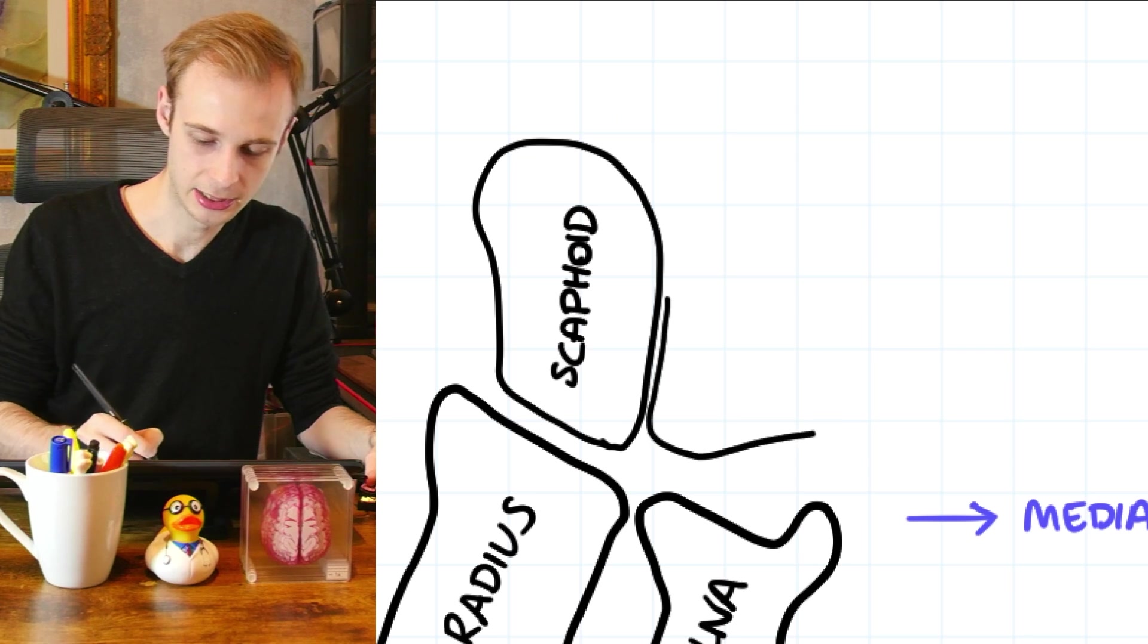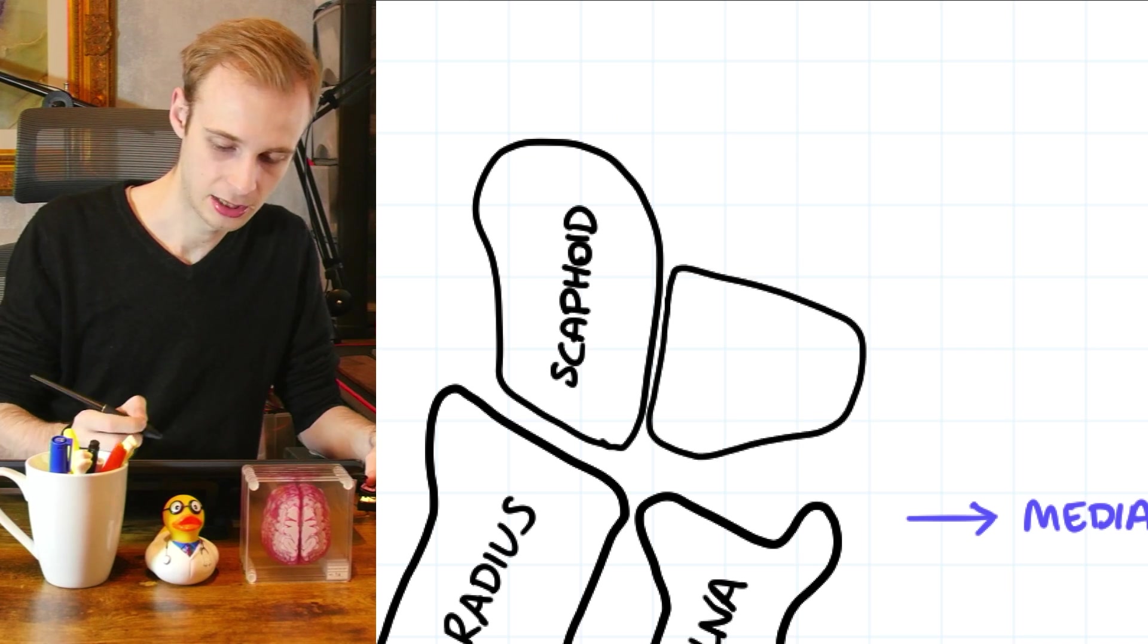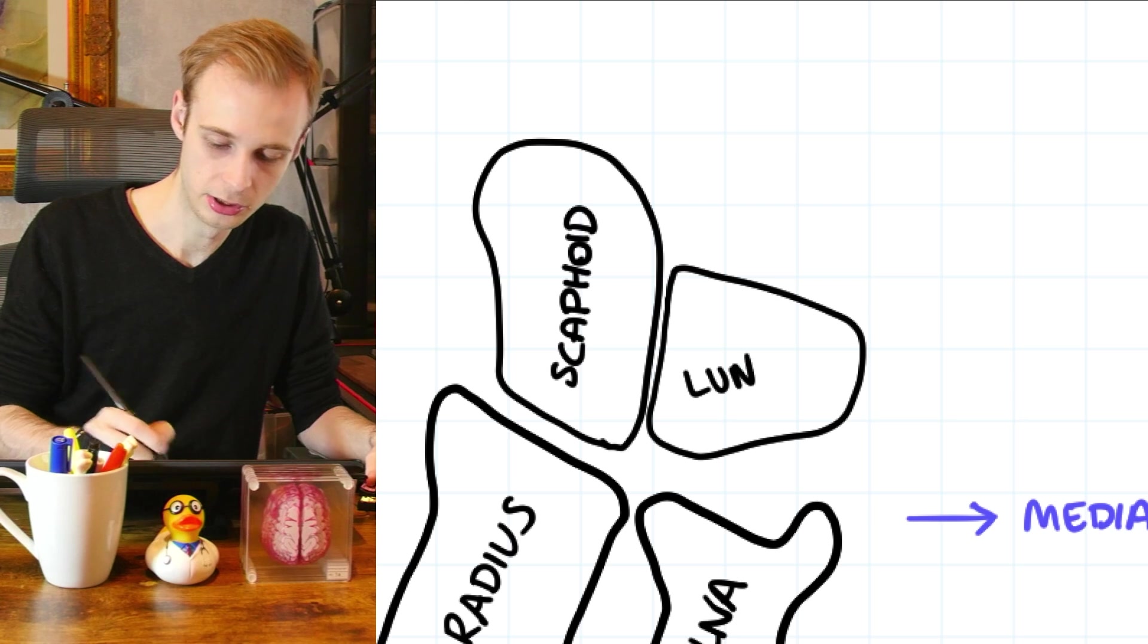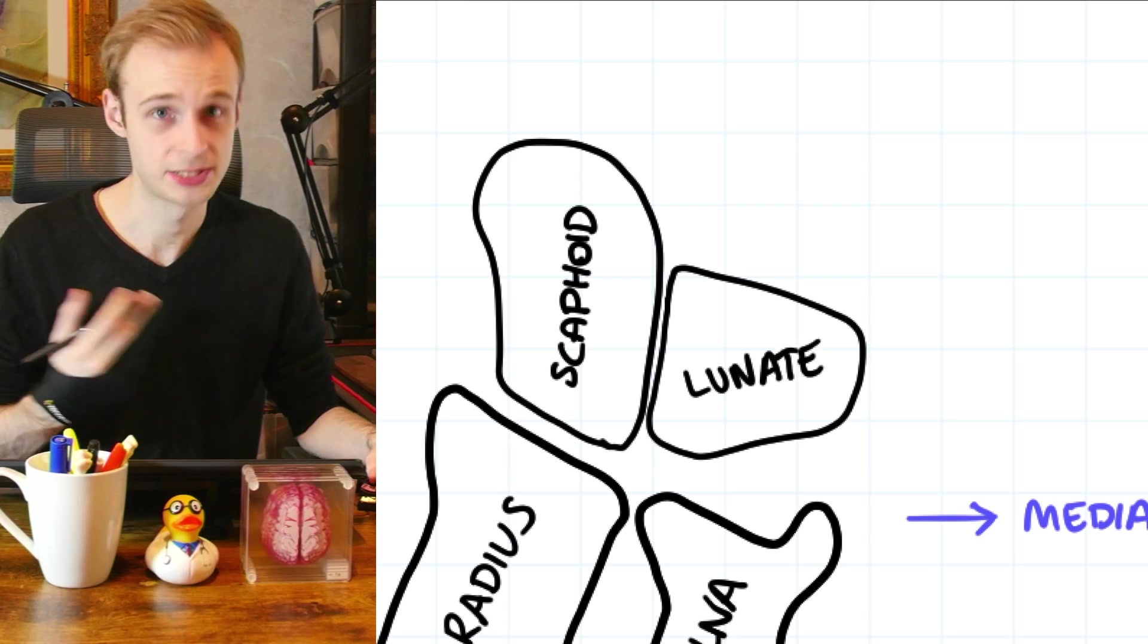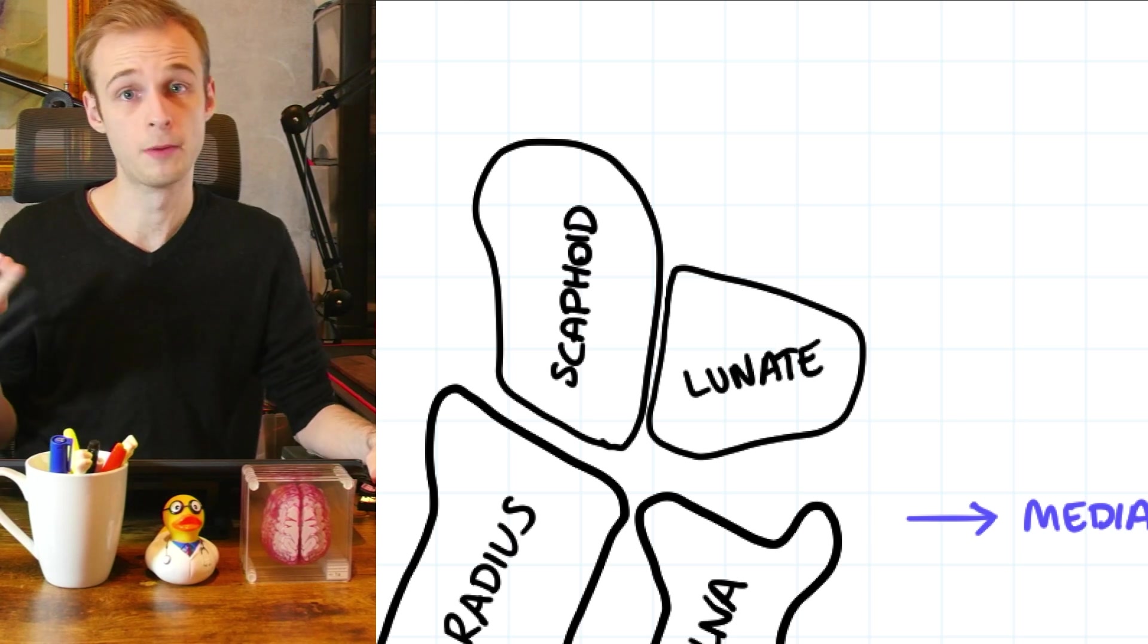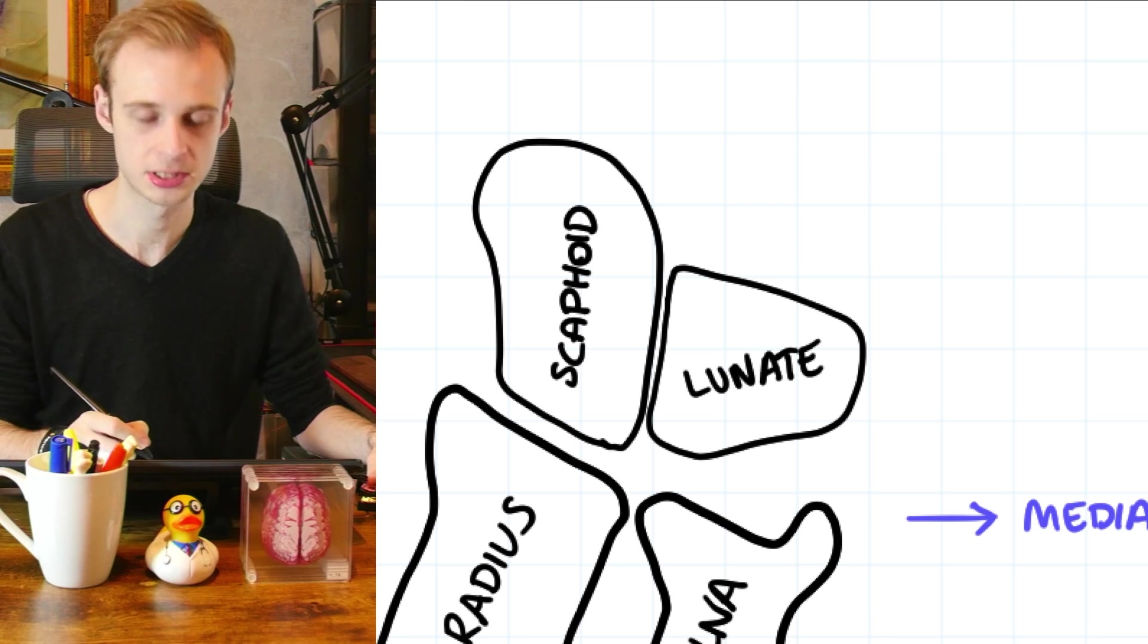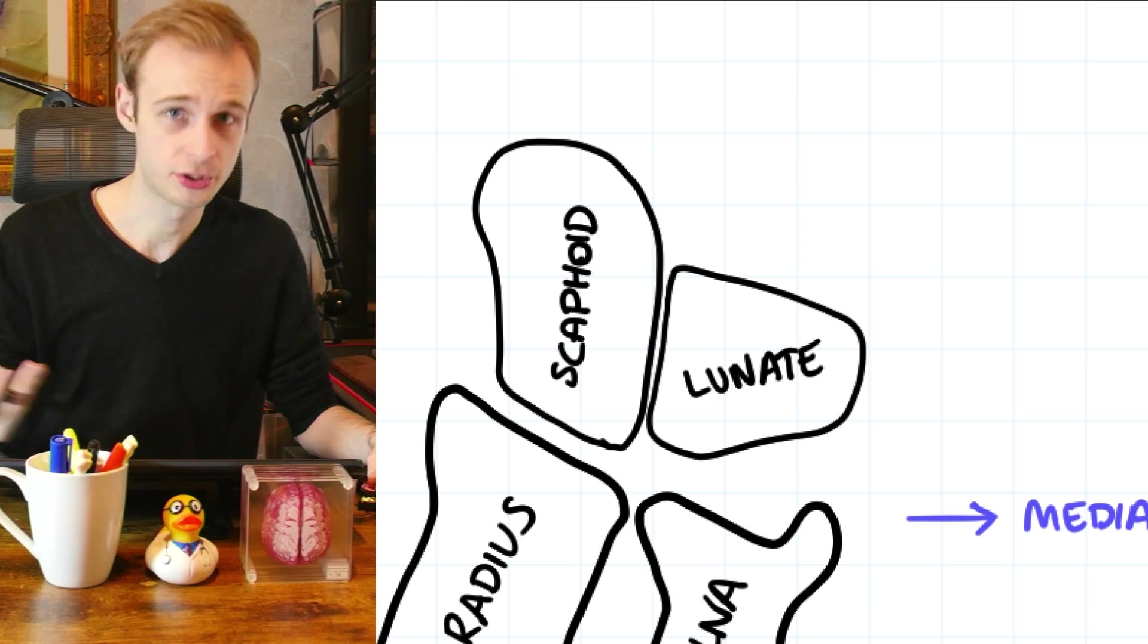Scaphoid is the equivalent in the hand sometimes known as the hand navicular and the bone that sits immediately next to it like this is called the lunate bone. As you might imagine named for its lunate or moon-like shape when it was discovered it was described as looking like the crescent moon.